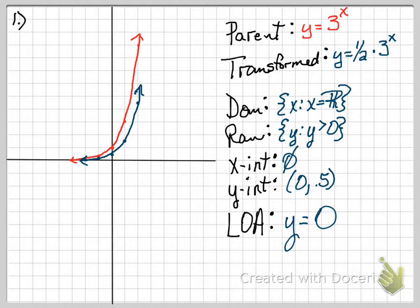And the x-intercept is, there isn't an x-intercept. The y-intercept is at 0.5. And it gives a line of asymptote of y equals 0.